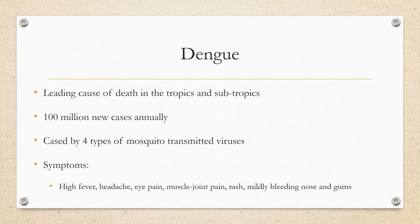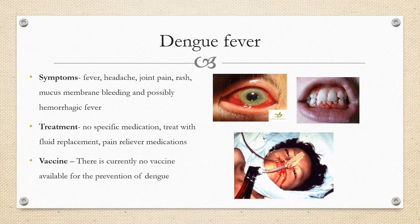Dengue is a leading cause of death in the tropics and subtropics, with 100 million new cases annually, especially in the Dominican Republic, Haiti, and Puerto Rico. It is caused by four types of mosquito-transmitted viruses — the Aedes mosquito bites an infected person and then transmits it to an uninfected person. Symptoms include high fever, headache, eye pain, muscle and joint pain, rash, mucous membrane bleeding, and possibly hemorrhagic fever. There is no specific medication or vaccine; treatment is supportive with fluid replacement and pain relief.